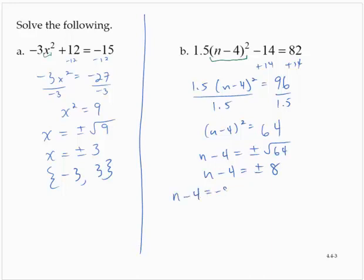n minus 4 is negative 8. n minus 4 is positive 8. Adding 4 to both sides of the first equation, n is negative 4. Adding 4 to both sides of the second equation, n is 12. Or you could write it as a solution set containing negative 4 and 12.